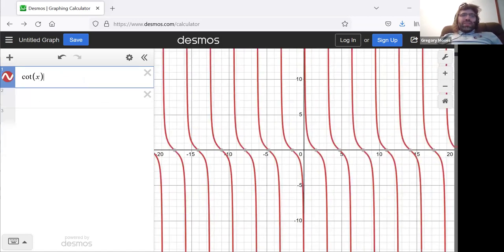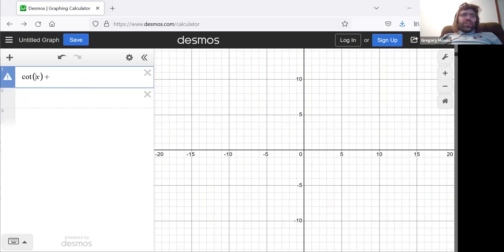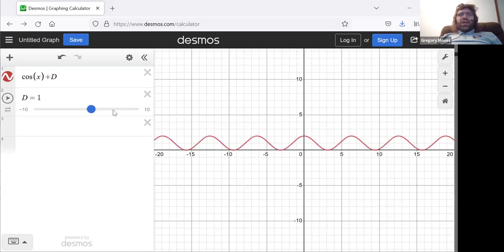Finally, if we have, let me change this to a cosine. If we have a D up here, what's it do to the cosine? Well, it moves it up and down vertically.